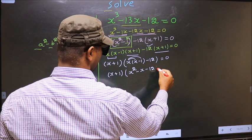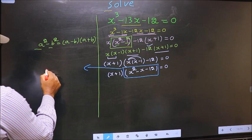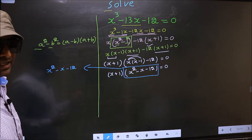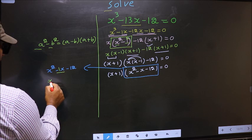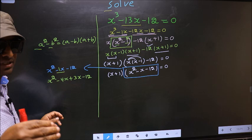Now we have a quadratic. I will factorize x squared minus x minus 12 by splitting the middle term. In place of minus x, I write minus 4x plus 3x, so the expression becomes x squared minus 4x plus 3x minus 12. I have directly split minus 1x into minus 4x and plus 3x.